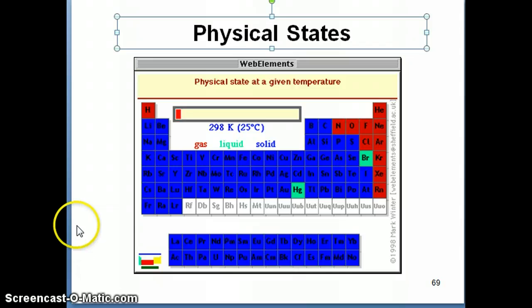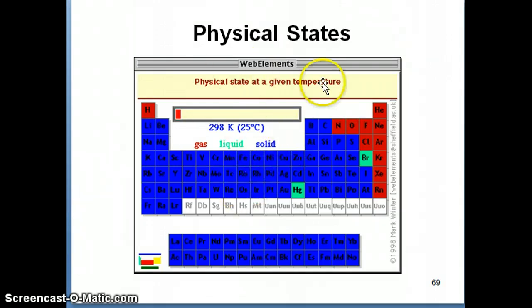Another piece of information that's useful that you can get out of the periodic table is the physical state. Most substances, most elements are actually found in the solid state. Those are all the ones colored in blue. The ones colored in light blue or cyan color exist as liquid at 25 degrees Celsius and pressure equals 1 atmosphere. In this case, only two elements exist as liquids, Hg, which is mercury, and Br2.